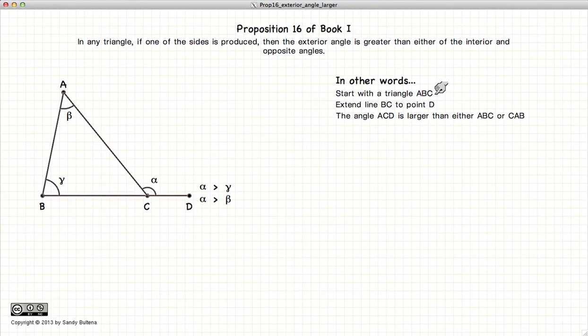This video presentation is going to be on Proposition 16 of Book 1, which states that for any given triangle, if you extend one of the sides outward, the exterior angle, in this case alpha, is going to be larger than either of the opposite internal angles, in this case gamma and beta.